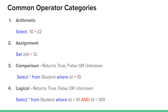The operator is the plus sign. The assignment operator assigns a simple value to a variable. The format is just an assignment.